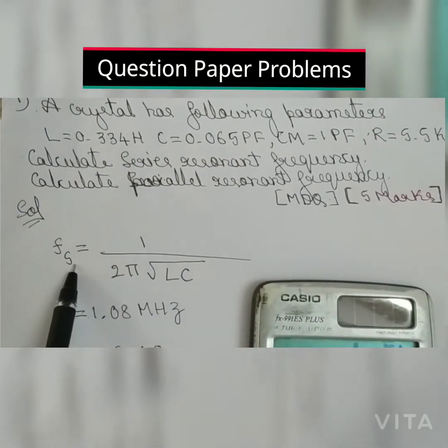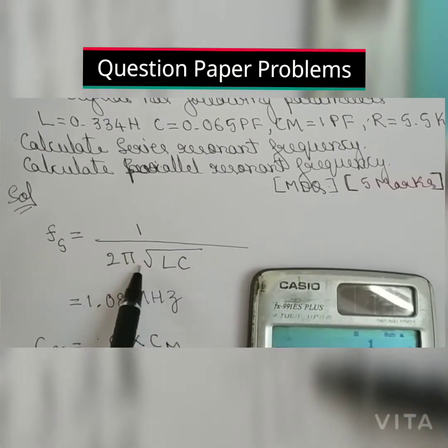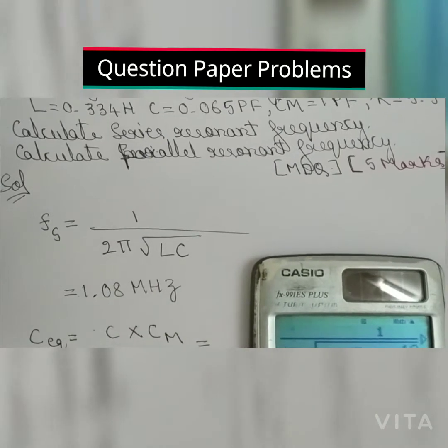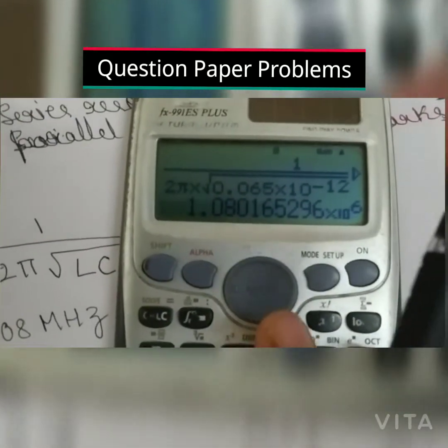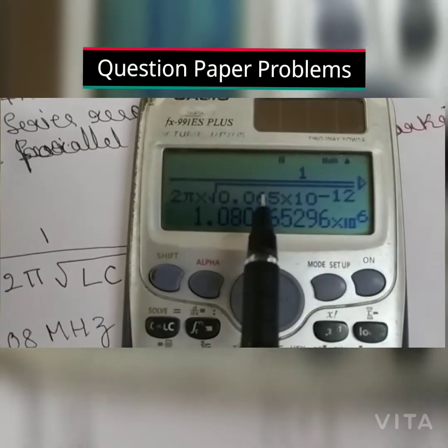What is the formula for series resonant frequency? Fs equals 1 divided by 2 pi square root of LC. Here you can observe 1 divided by 2 pi into square root of C.